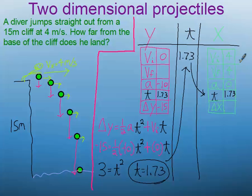Now that we have that information, time, we're able to swing over to the x direction and we're actually very close to being finished. What we're looking for is how far he traveled. Well, we know that he went 4 meters to the right every second. And we also know that he spent 1.73 seconds in the air.